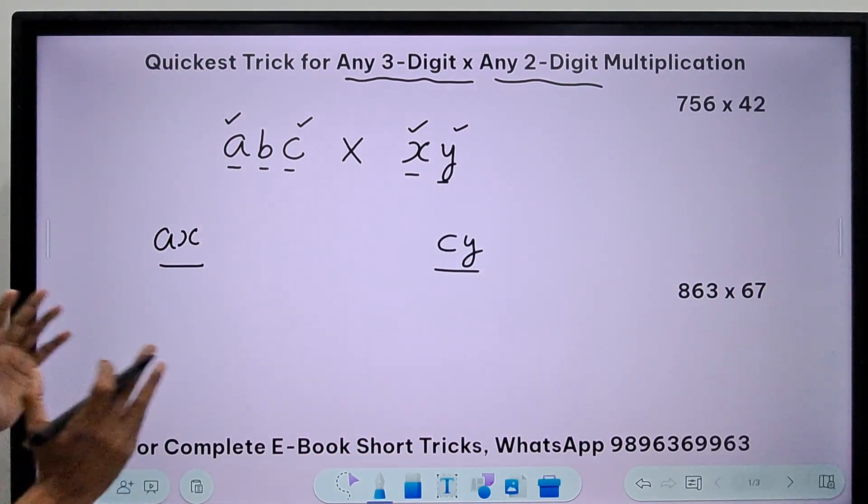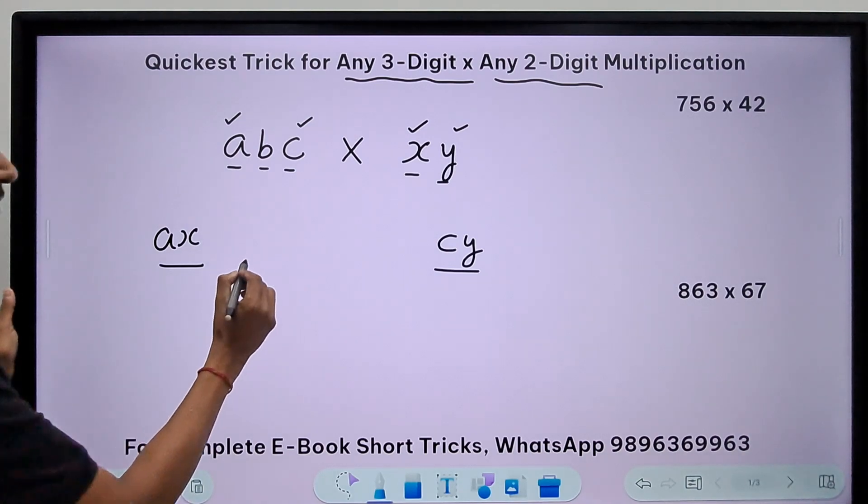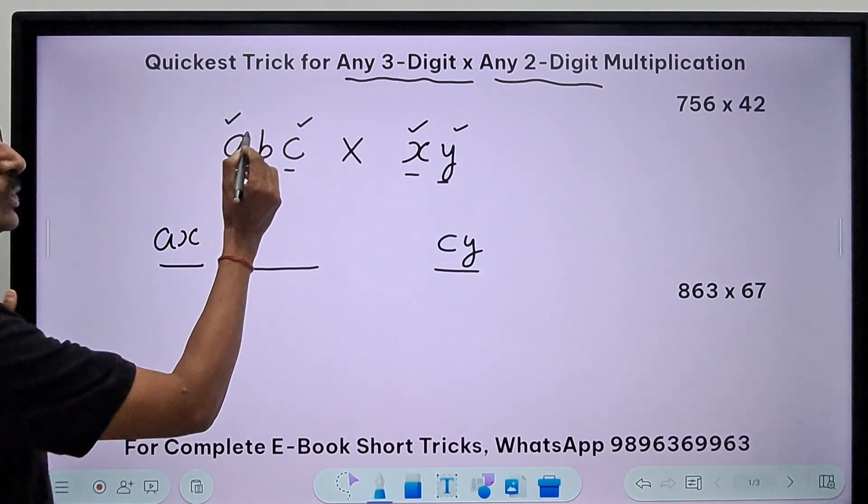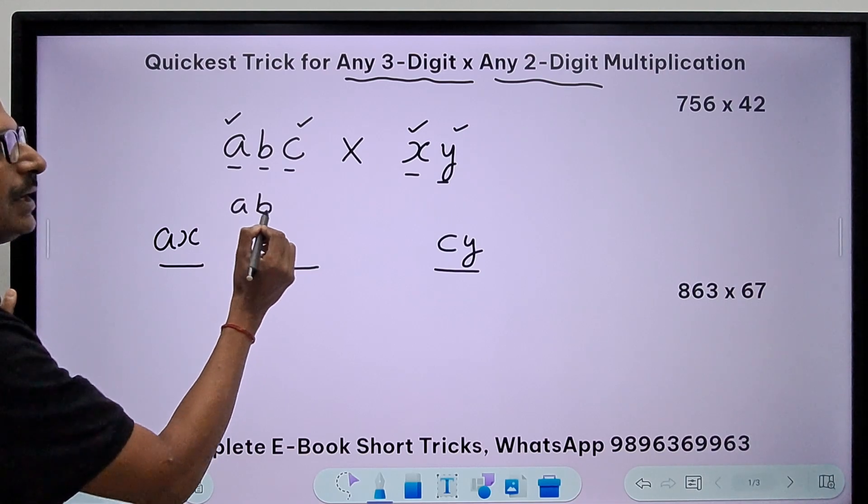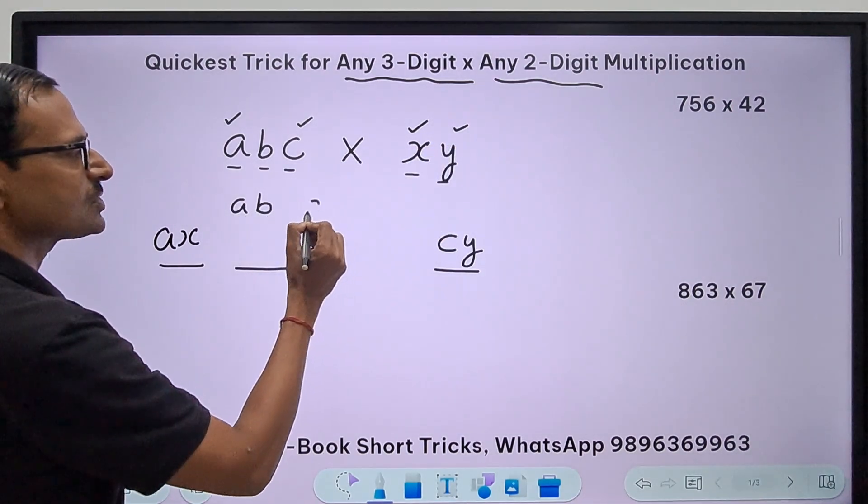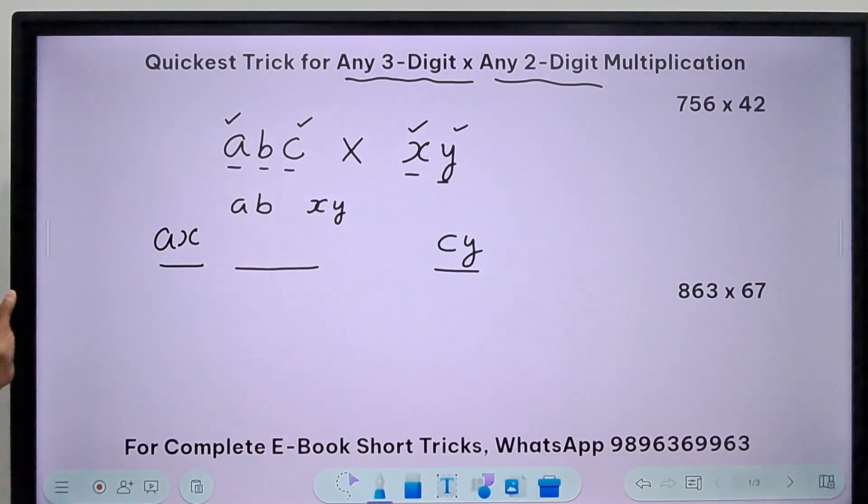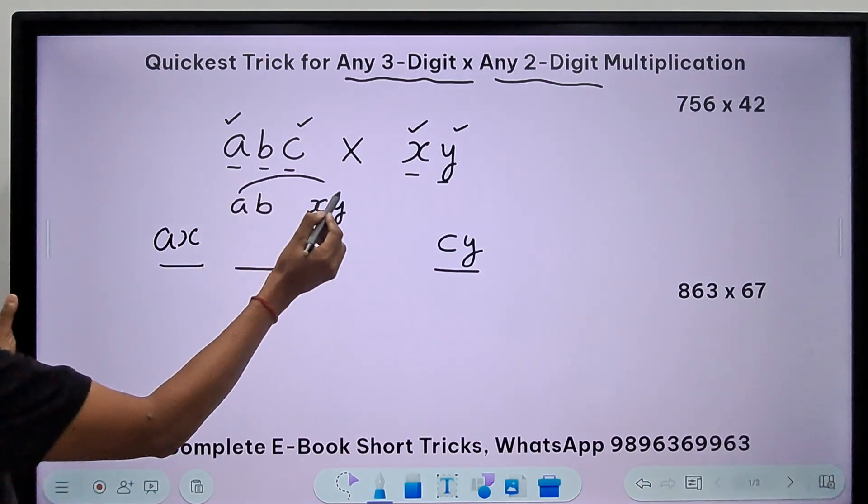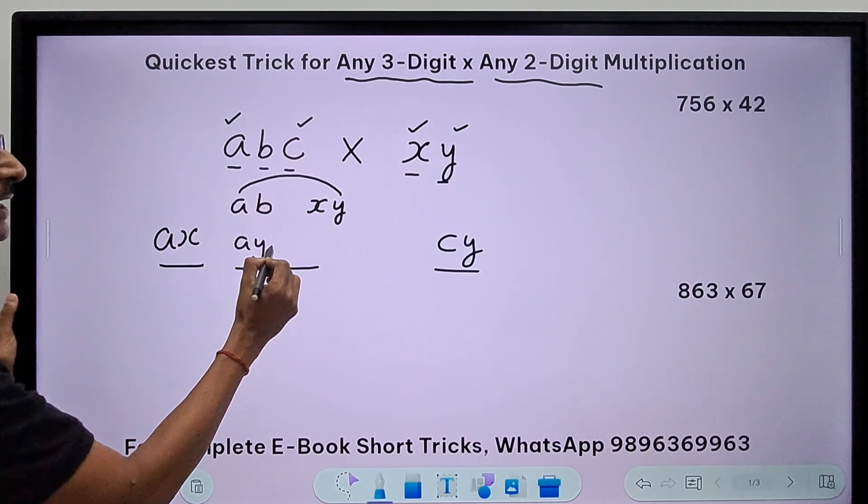For the middle two we have to be careful. For the second number we will take the first two digits here, ab, and the number xy, and we will be multiplying ay and adding it to the product of bx. This is going to be your second number.